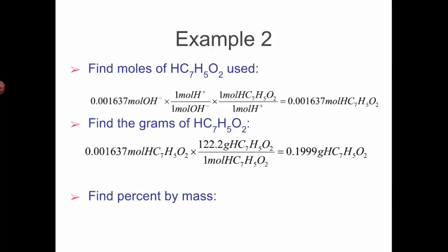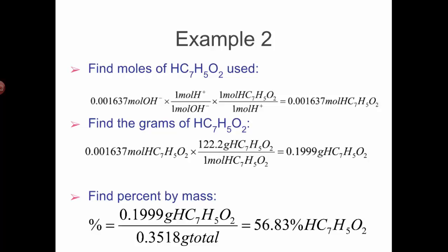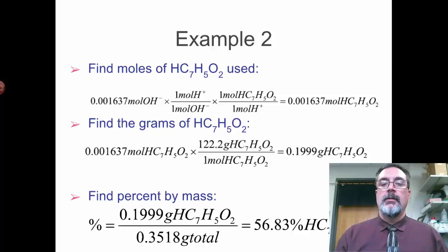Now I find the grams of the acid using the molar mass (122.2 g/mol), which gives 0.1999 grams of benzoic acid. I divide that by the original mass of the total sample (0.3518 g) and I have my percent composition - 56.83% by mass. That sample was only a little more than half benzoic acid; the rest was impurities. That's another example of how you can use titration. In all cases we need to know very accurately one of the two components, and then we can use that information to find the other one. We'll standardize base, do basic acid-base titration on a small scale so you can see you don't need a lot of big glassware.